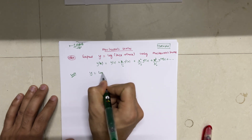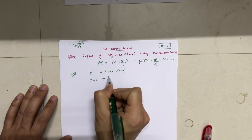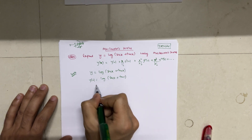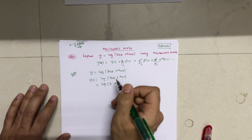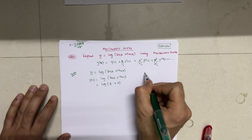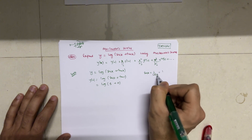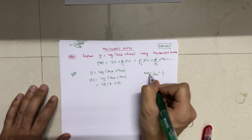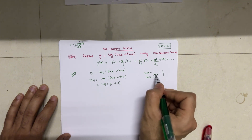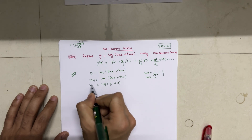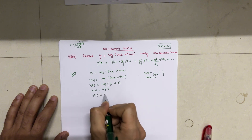We are given y = log(sec x + tan x). To find y(0), substitute x = 0: y(0) = log(sec 0 + tan 0). Since sec 0 = 1/cos 0 = 1/1 = 1, and tan 0 = 0, we get y(0) = log(1 + 0) = log(1) = 0.